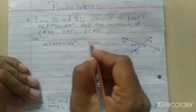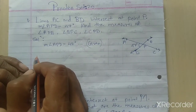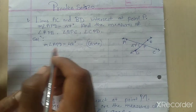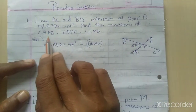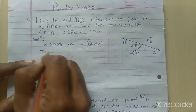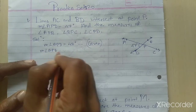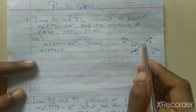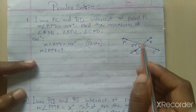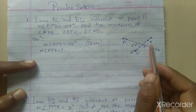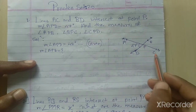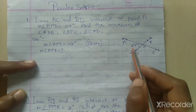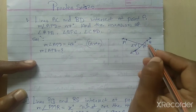Next, we have to find APB. Now APB is not the opposite of APD. The angle opposite to APD is BPC. Since they are vertically opposite angles, BPC is also 47 degrees.